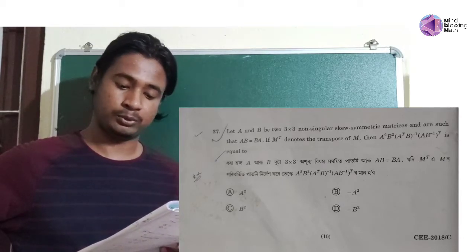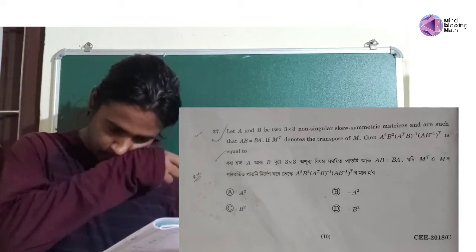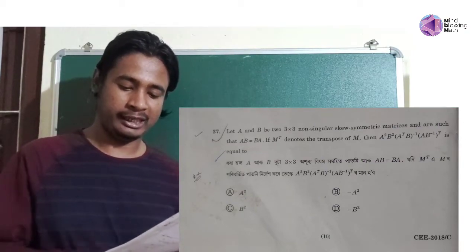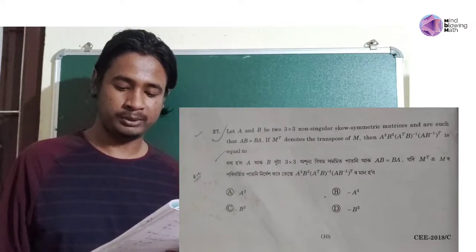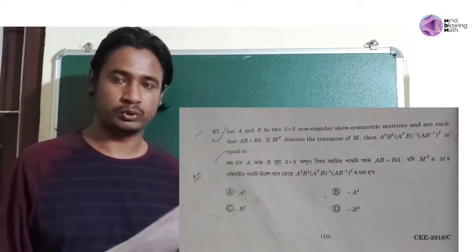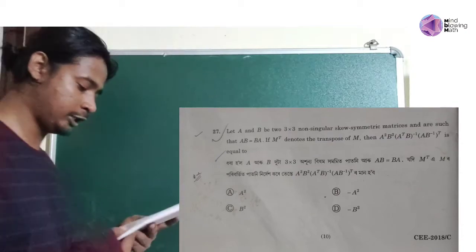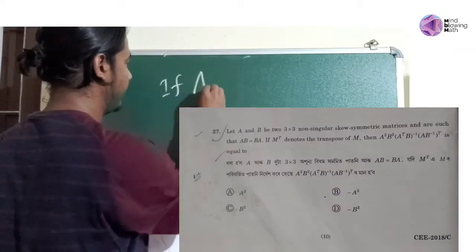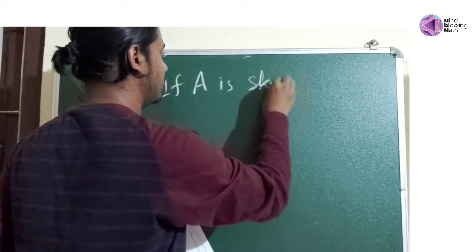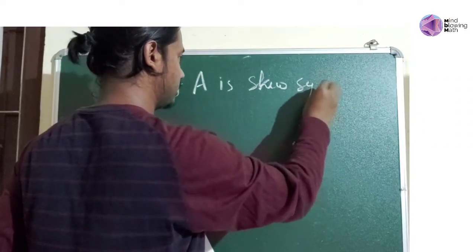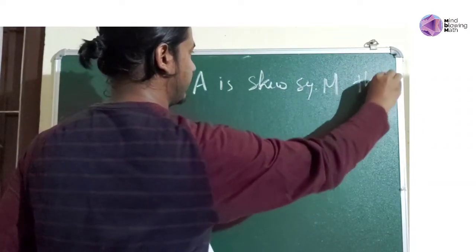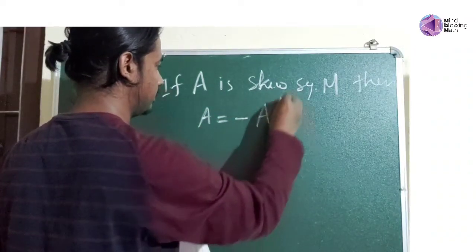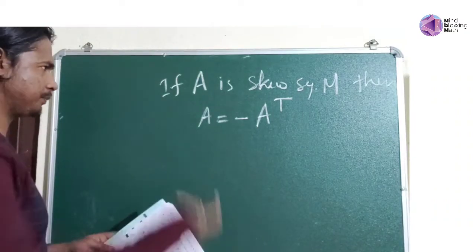M transpose denotes the transpose of M. So, I am transpose. This is the value of A squared B squared A transpose B whole inverse AB inverse transpose. If A is a skew symmetric matrix, then A is equal to minus A transpose.